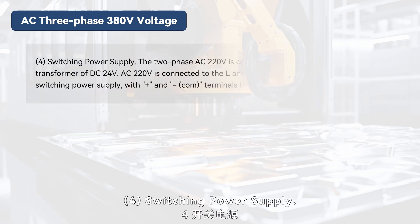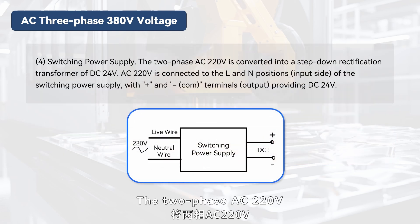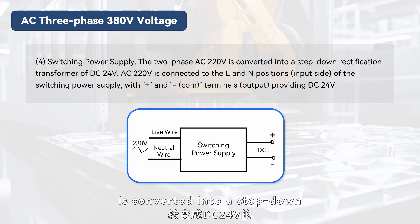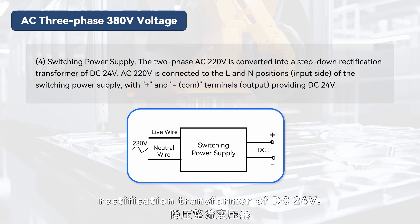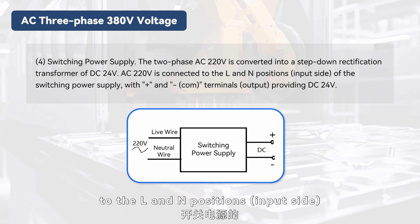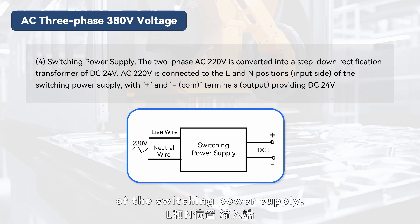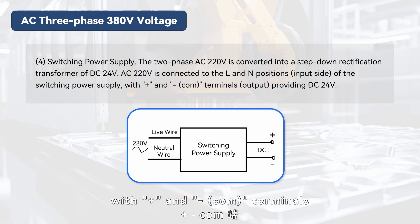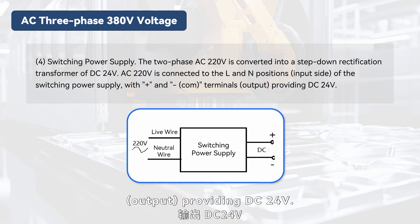Component 4: Switching Power Supply. The two-phase AC 220 volts is converted into DC 24 volts via a step-down rectification transformer. AC 220 volts is connected to the L and N positions (input side) of the switching power supply, with plus and minus COM terminals output, providing DC 24 volts.